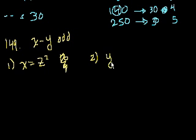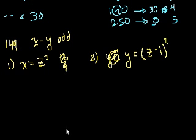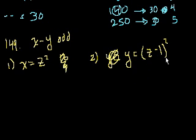Statement 2 says y is equal to (z minus 1) squared. By itself, this is like statement 1 — it just tells me y is a perfect square, which could be even or odd. But if we take both together, something interesting happens. If z is odd, then its square is also odd, so x is odd. And z minus 1 would be even, so y would be even — one odd, one even.